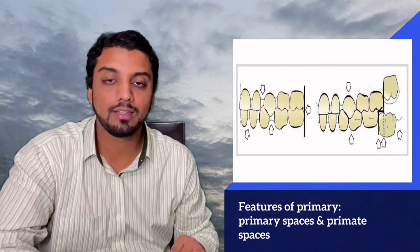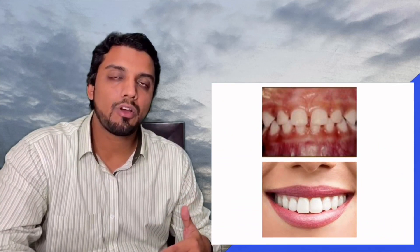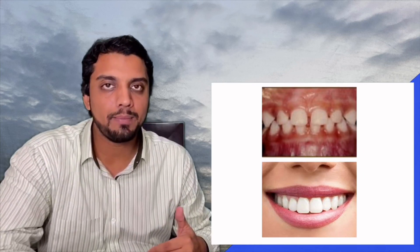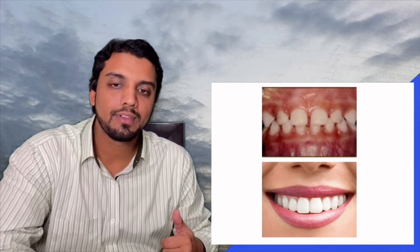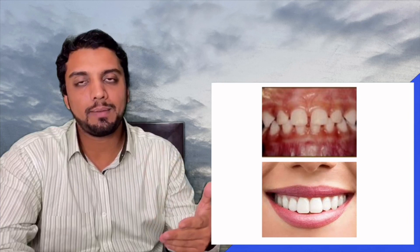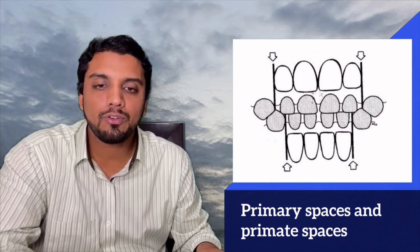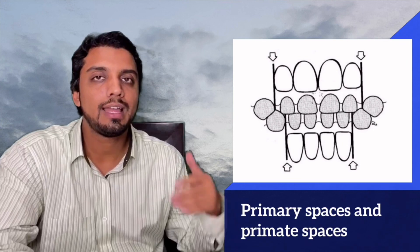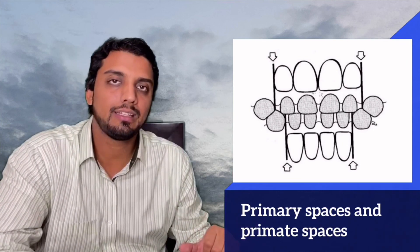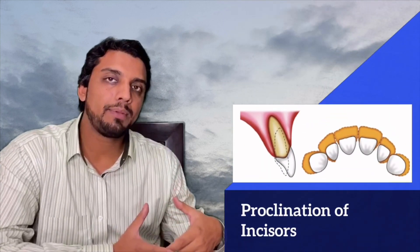As you can see in this picture, when the permanent incisors erupt, the small primary spaces are utilized for the accommodation of the permanent incisors. The primate space, especially in the maxilla — which is mesial to the primary canine — is also used for the adjustment of the permanent incisors, which are increased in the mesiodistal dimension.